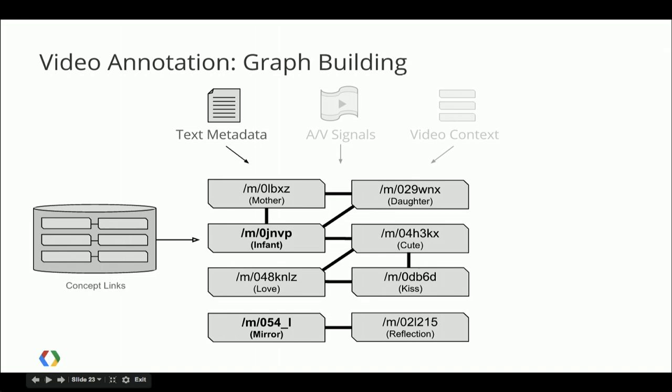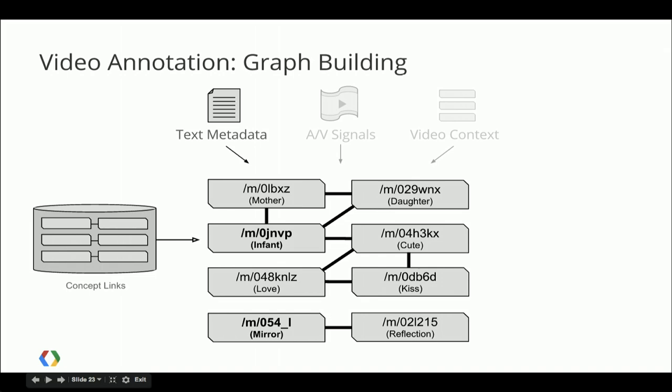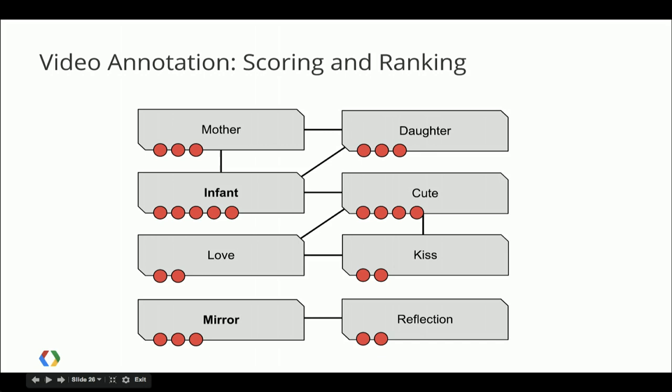So now we have weighted entities and we have a support graph. How do we figure out which entities are central to the video? That's where we go to scoring and thresholding. We give each entity one point simply for existing, two points for existing in the title in this example. Then we give one additional point for each entity that links to that entity. So infant gets three more points because three other entities link to it. Mirror gets one more point. After applying some thresholding, we determine that the central entities for this video are infant and cute.